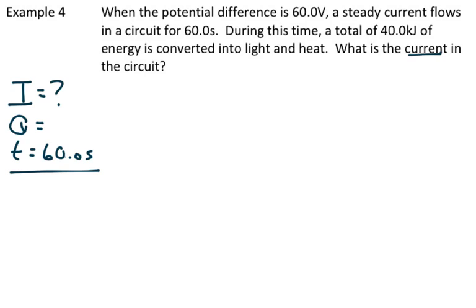We've also got V equals W over Q. Well, we have voltage and we have work, so that one's going to work nicely. 60 volts. 40 kilojoules, we need to be in joules, that would be 40,000 joules.